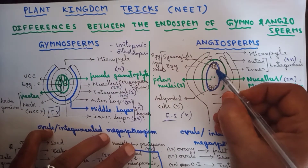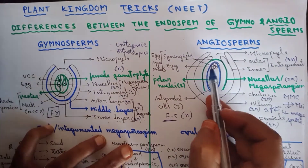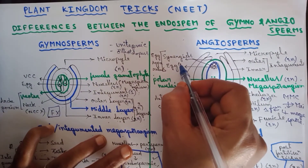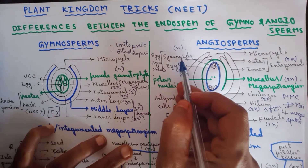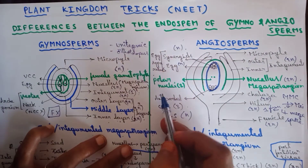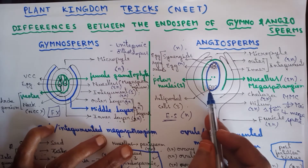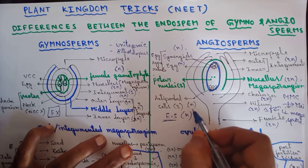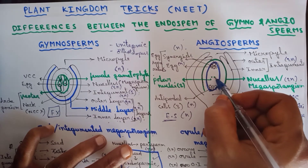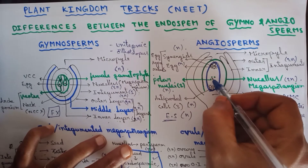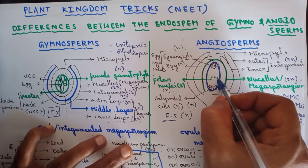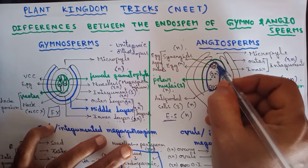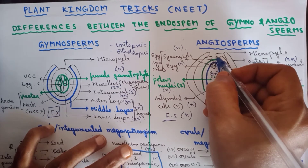The cells inside the embryo sac are: the egg at the center and two synergids at the sides of the egg. Egg is haploid; synergids are also haploid. Synergids and egg together are called the egg apparatus. Three antipodal cells are also haploid. The two polar nuclei are also haploid and fuse together to form the diploid secondary nucleus just before fertilization.